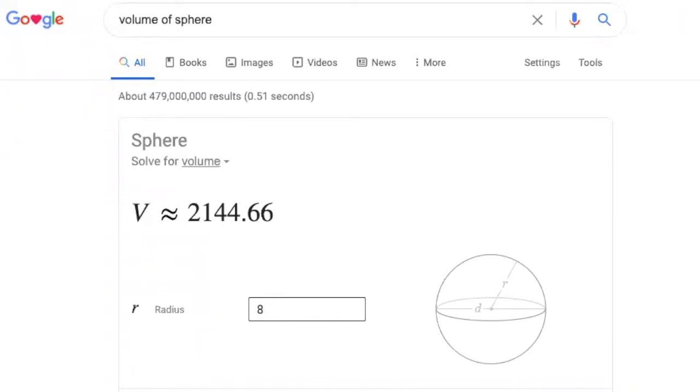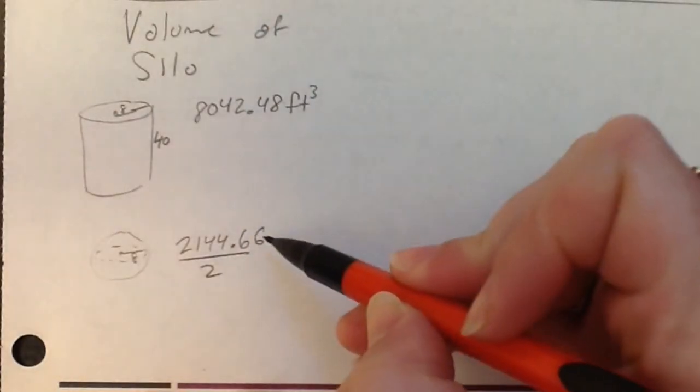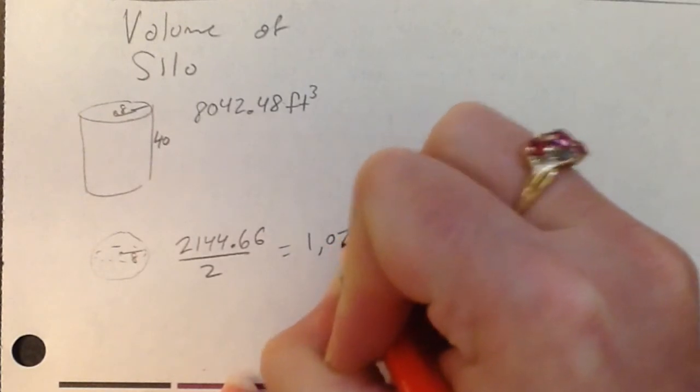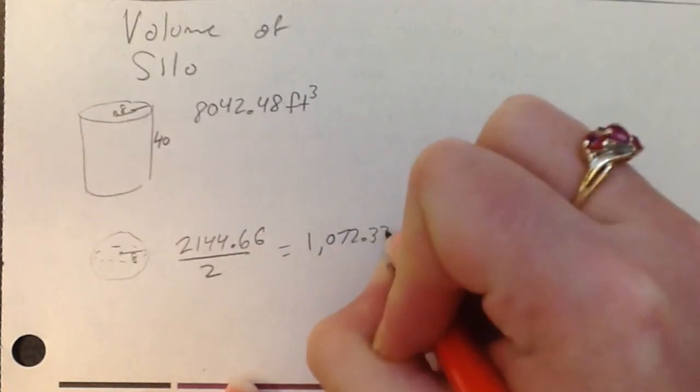Now that wasn't what we wanted. We need half of that. So taking half of our 2144, that is 1072.33-ish.